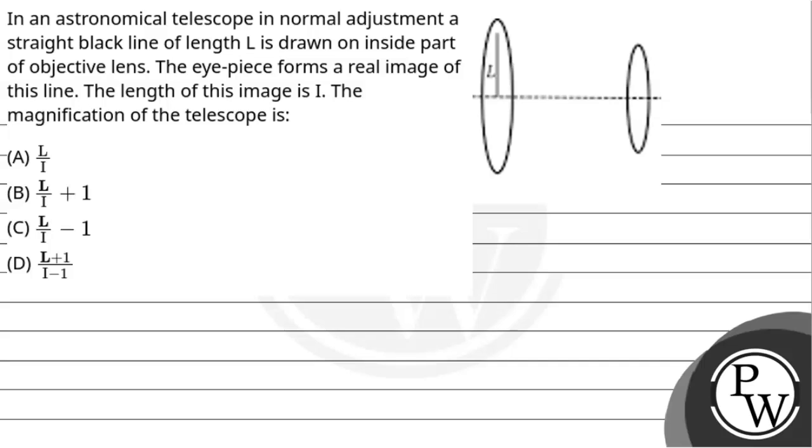Hello, let's get to the question. The question says: in an astronomical telescope in normal adjustment, a straight black line of length L is drawn on the inside part of the objective lens. The eyepiece forms a real image of this line. The length of this image is I. The magnification of the telescope is?